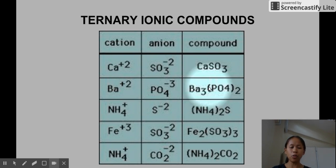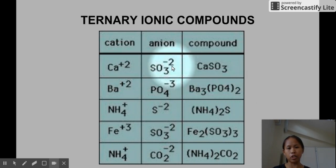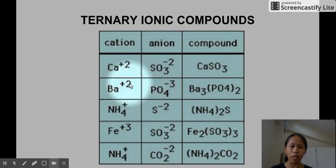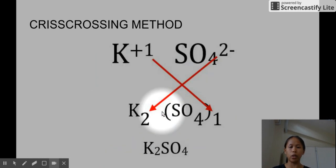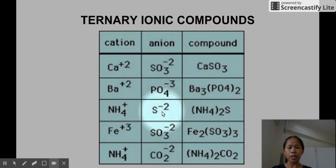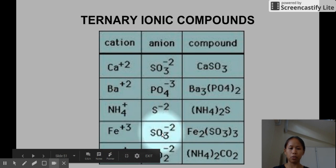You'll notice a parenthesis symbol here. Parentheses are used when you have a ratio that is not one to one and the subscript values are different. It doesn't apply when subscript values are the same — that cancels out. But if the subscript values are different and more than one, you need to put parentheses to group the polyatomic ion because it consists of more than one element. For ammonium and sulfide S²⁻, when you crisscross it becomes (NH₄)₂S — NH₄ is enclosed because it contains two elements: nitrogen and hydrogen.